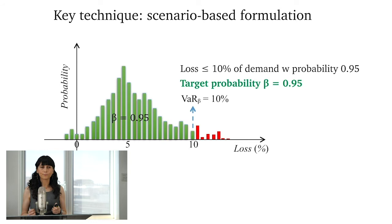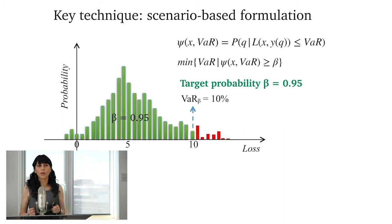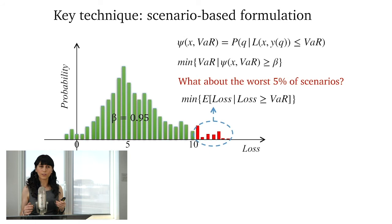So we can write a mathematical formulation to find this point for us. And we can scale over multiple scenarios. But the question is, what about the worst-case failure scenarios? What about these worst 5% of scenarios? Our formulation takes care of this by minimizing the expected loss of all the failure scenarios when their loss is larger than the value at risk.